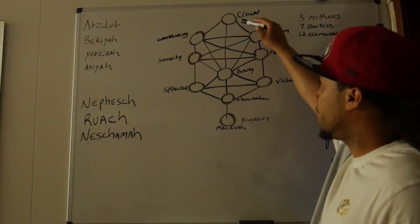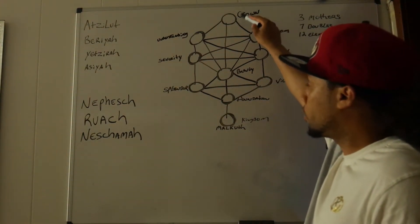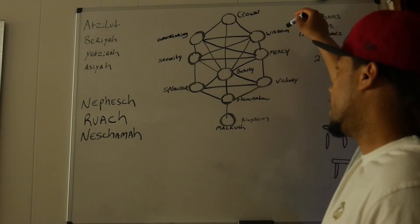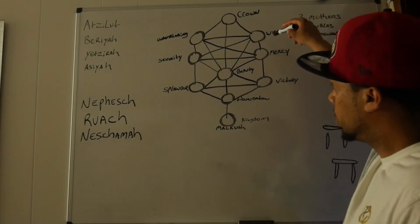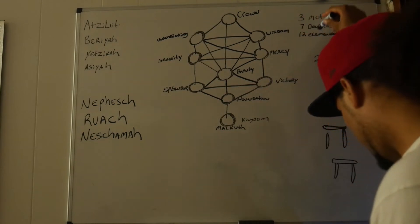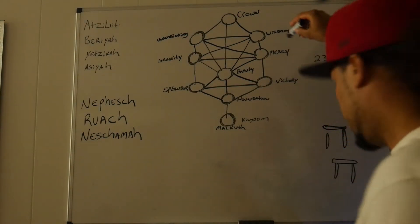So we have Aheyeh, crown, Kether. And we have wisdom, Chokhmah, which is Yod-Hei-Vav-Hei, Yah-ha-va or Yah-ha-wa. And we have Binah, understanding.